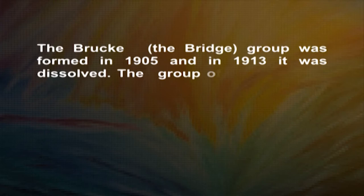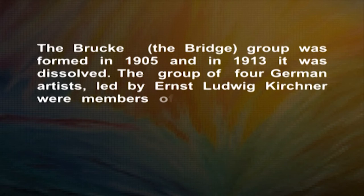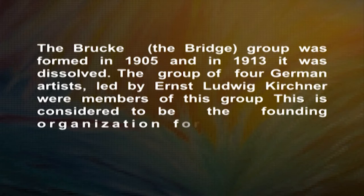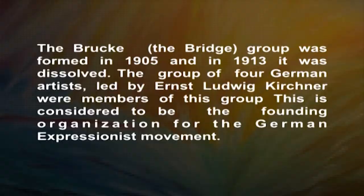Die Brücke, the Bridge Group, was formed in 1905 and dissolved in 1913. The group of four German artists was led by Ernst Ludwig Kirchner. This is considered to be the founding organization for the German Expressionist movement. Along with Fritz Bleyl, Karl Schmidt-Rottluff, and Erich Heckel, Kirchner established Die Brücke as a youth-oriented art movement that would challenge traditional academic styles of fine art, which by that point included Impressionism and Post-Impressionism. The group published their manifesto in 1906, carved on wood.